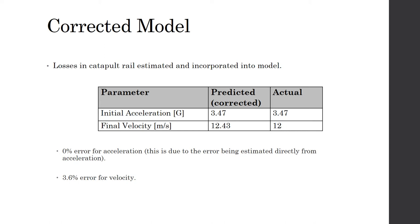However, the losses are also small enough to show that the corrected model has a better prediction of the UAV's velocity and acceleration over the length of the catapult.